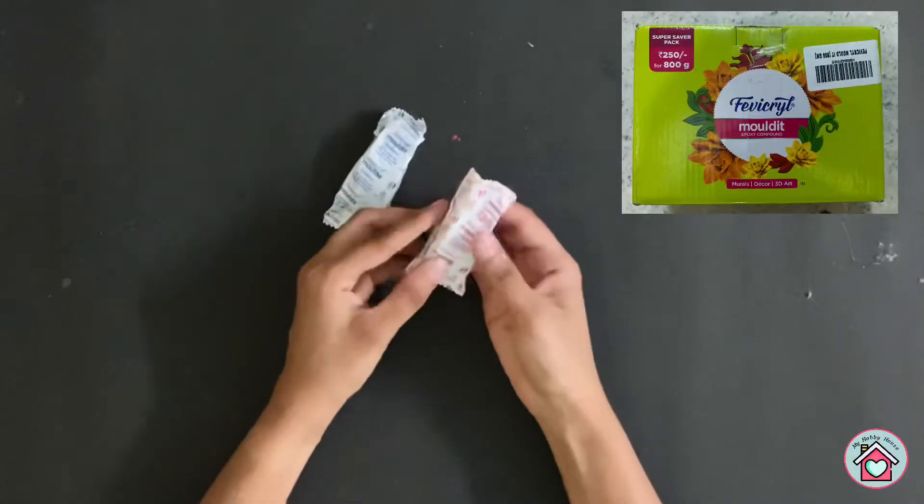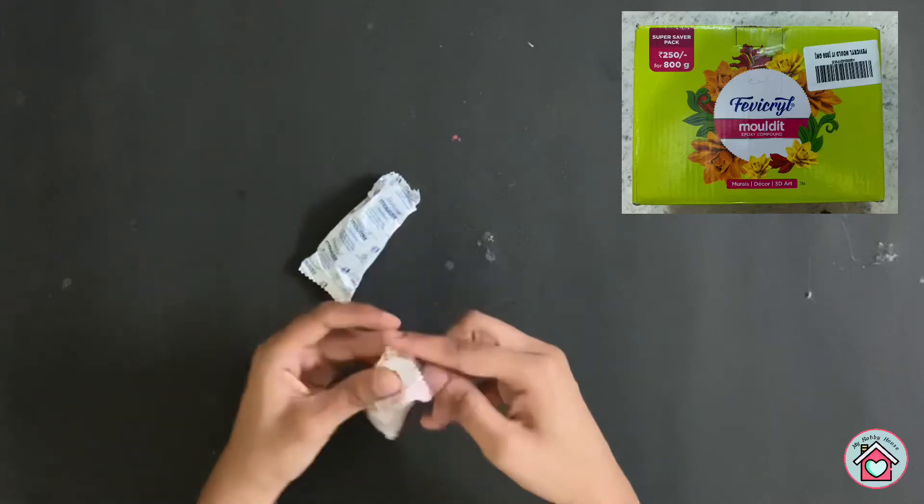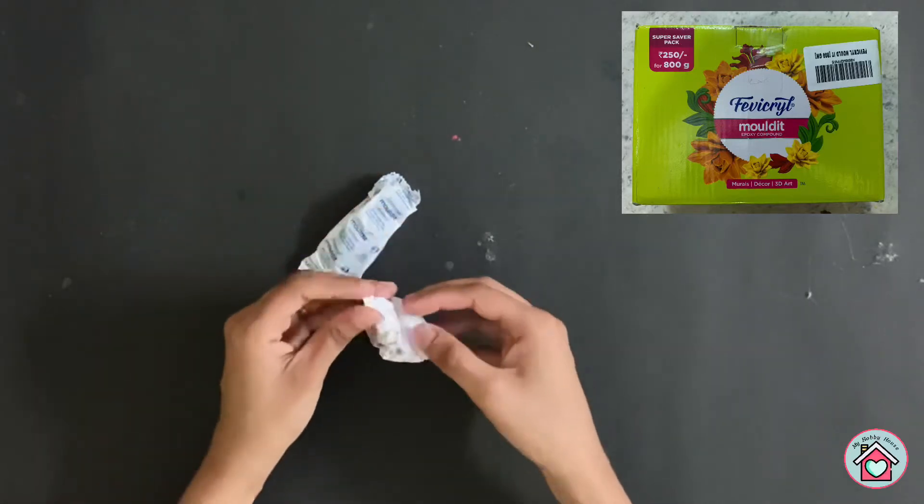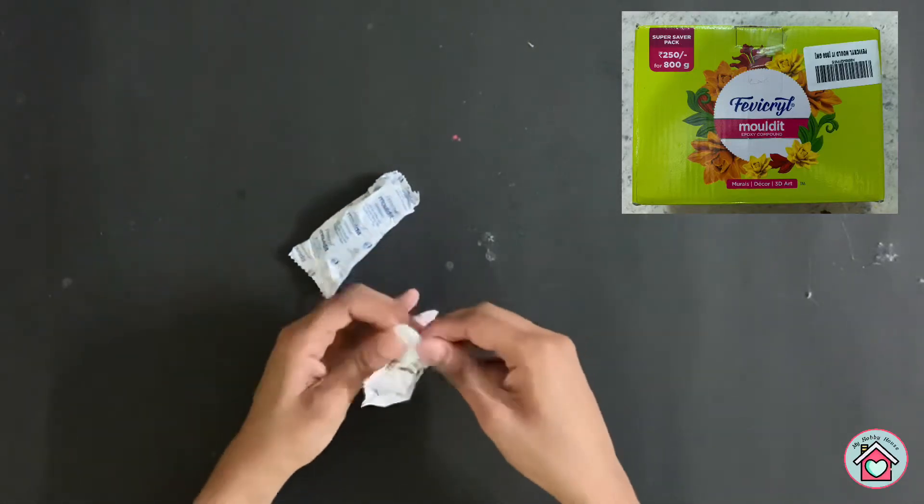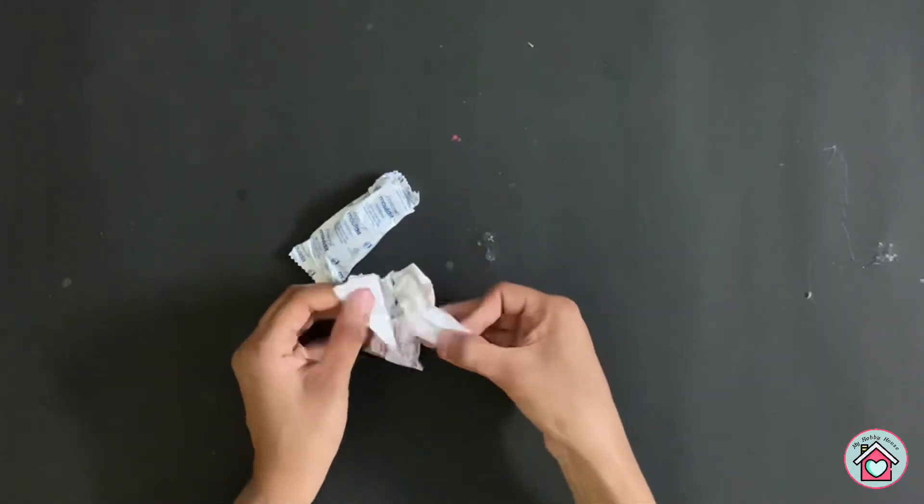Here I am using Fevicrel molded to seal the ends. There will be two packets, one is resin and the other is hardener. Take equal quantities and mix it thoroughly.